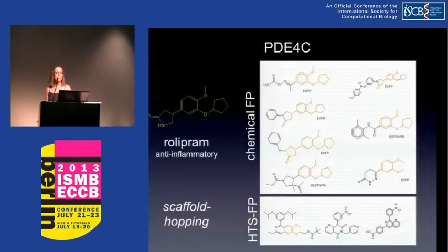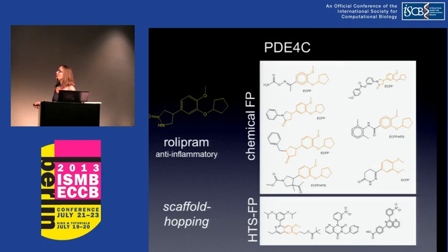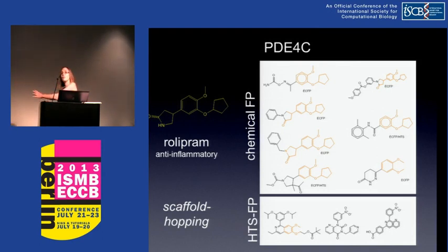Another example is PDE4, which is related to inflammation. We use a reference compound that is really anti-inflammatory. Using chemical fingerprints, I obtain many scaffolds but they have a lot of overlap with the reference compound, as expected. Using HTS fingerprints, we are able to do what we call scaffold hopping — going from one active scaffold to another very dissimilar but also active scaffold — with almost no chemical overlap with the original molecule.